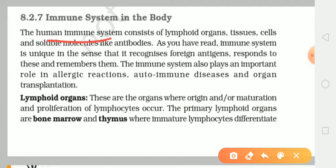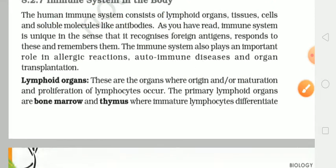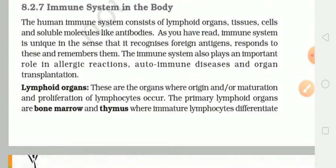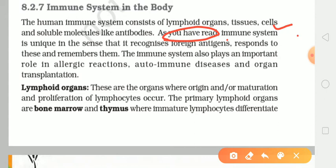Toh humara jo immune system hai, usmein kya-kya cheezein maujood hain? Lymphoid organs hain, tissues hain, cells hain, aur kuch antibodies hain. As you have read, the immune system is unique in the sense that it recognizes foreign antigens, responds to these and remembers them. Toh hum already ek characteristic padh chuke hain — ki voh self aur non-self ke beech mein differentiate kar paati hai, unke upar attack karti hai, aur saath-saath unko yaad bhi rakhti hai, yaani ki memory cells ko bhi generate karti hai.